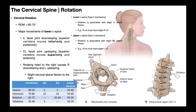On the left — the contralateral side — the facet joints up-slope during right rotation. The superior vertebra moves superiorly and anteriorly. So C3 glides both superiorly and anteriorly relative to C4. This creates more space in the intervertebral foramina. If a person had left-side radiculopathy, they may actually prefer right rotation because it opens up those foramina on the left side.